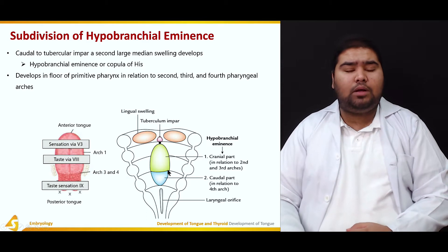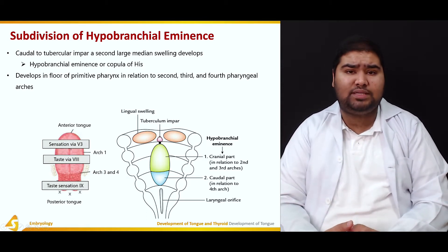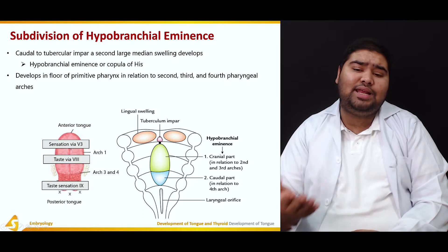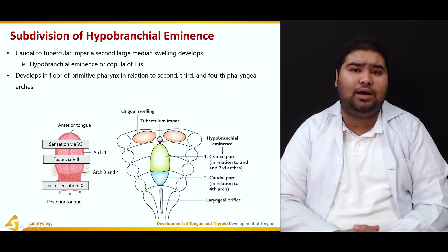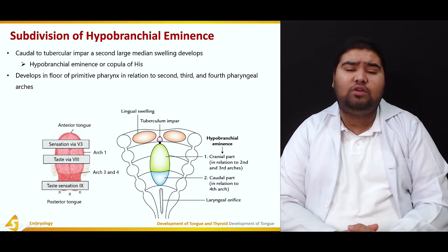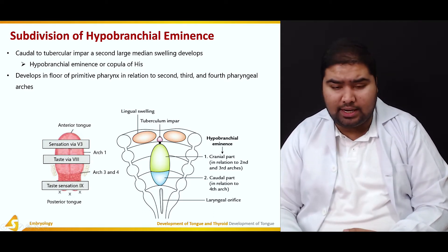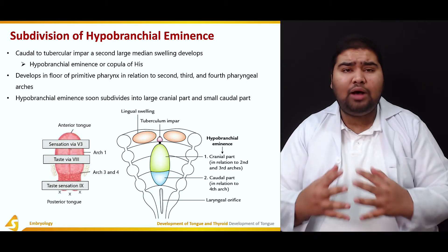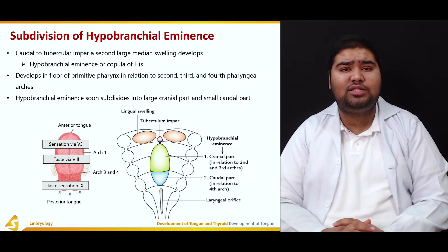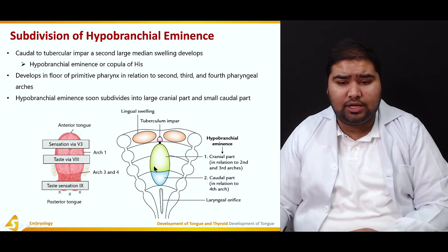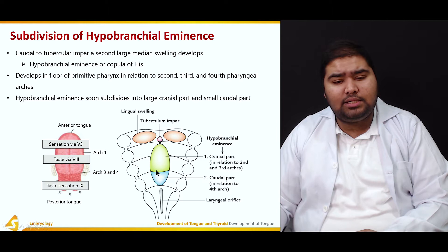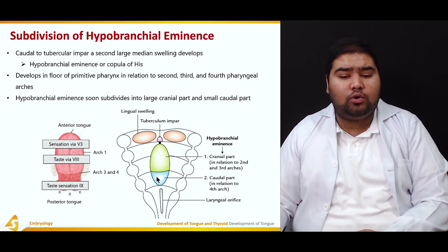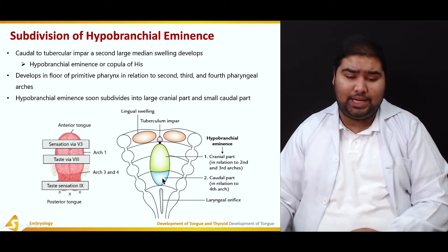This copula of His develops in the floor of the primitive pharynx and is related to the second, third, and fourth pharyngeal arches — this is the contribution of those arches. The hypobranchial eminence soon divides into a large cranial part and a small caudal part.